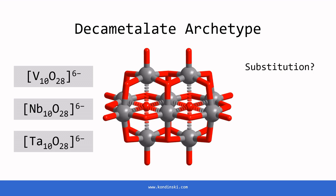In the decametalate structure, the primary metal centers can be substituted with other d-block or p-block elements. When these substitutions involve different metals, the resulting structures are known as bimetallic decametalates.